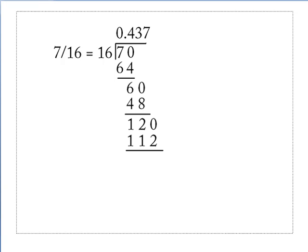And 7 times 16 is 112. 112 subtracted from 120 is 8. We add a zero. 5 times 16 is 80. We subtract the 80, and we wind up with zero. We've terminated. That's as far as we can go.